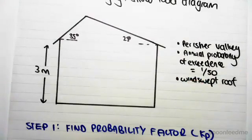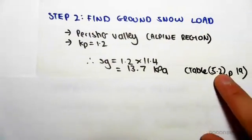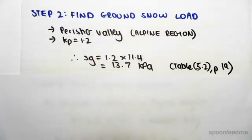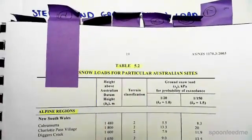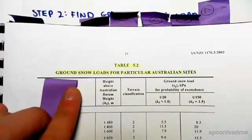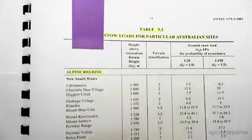Step two: once we're given that, we can go and find our ground snow load. It's pretty simple. So all we do is we go to table 5.2 on page 19. So if we flip over to page 19, we're at table 5.2.